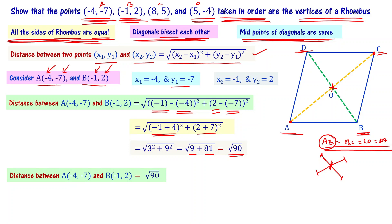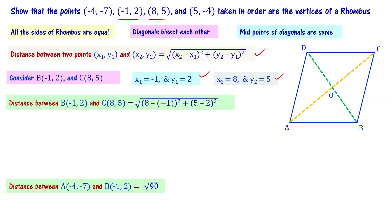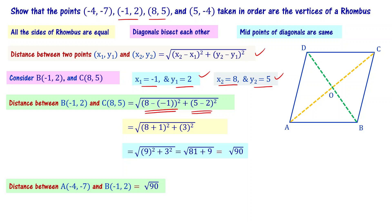Now let's find the distance between B and C. B is minus 1, 2 and C is 8, 5. Substituting: square root of (8 plus 1) whole square plus (5 minus 2) whole square, which is square root of 9 squared plus 3 squared, that is square root of 81 plus 9, equal to square root of 90.